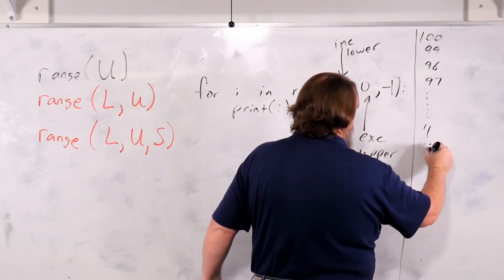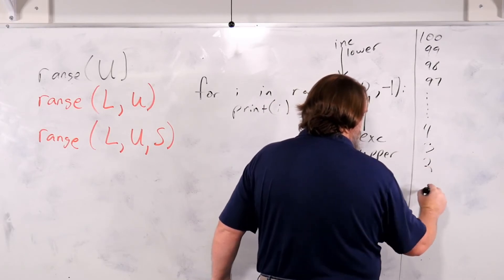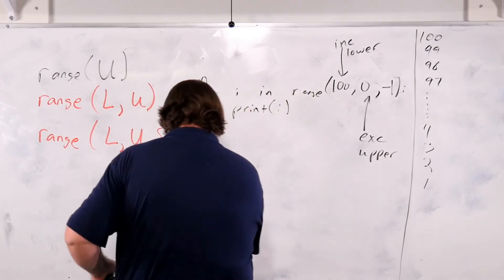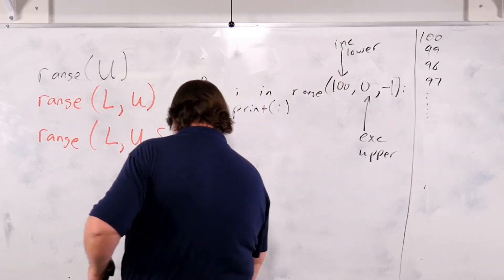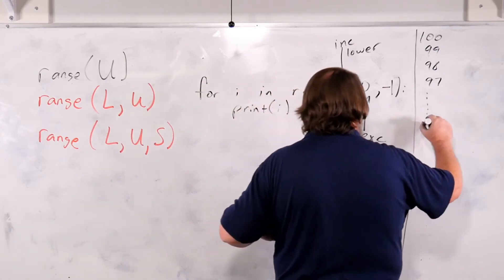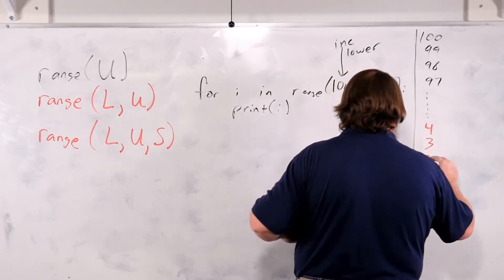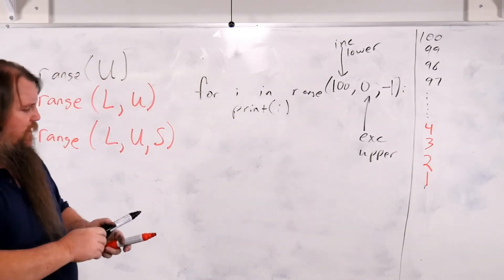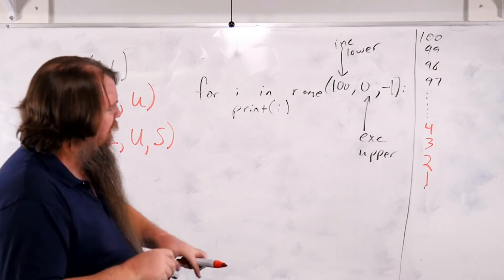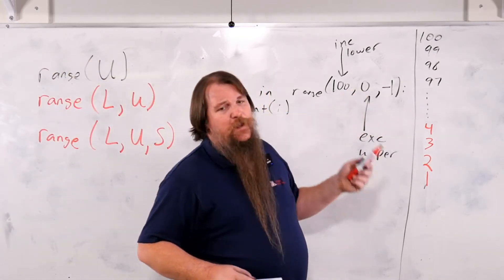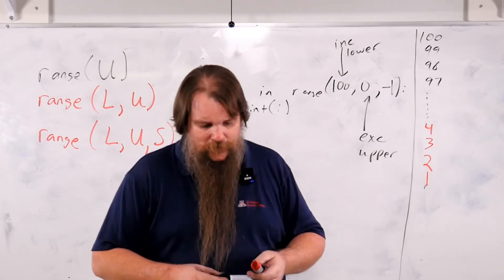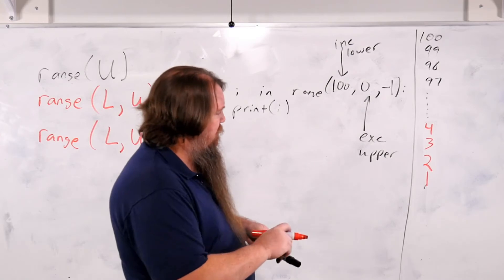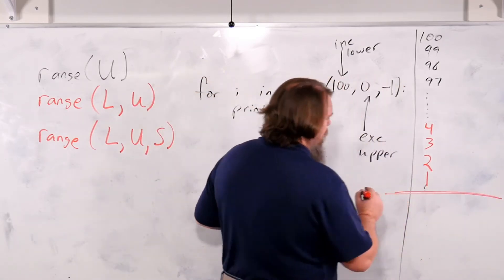Now what happens when we start to get low? We've got four, three, two, one. When it, I'm sorry that this is, these pens are going crazy. Four, three, two, and one. So it has counted down to this point. Zero is the stop point. And we don't actually run zero. So this will actually end after hitting number one.